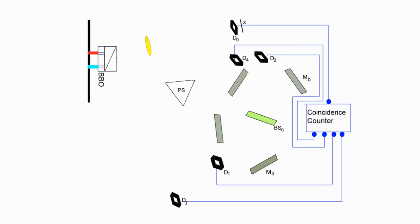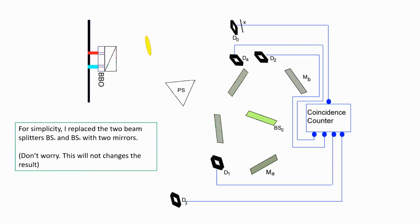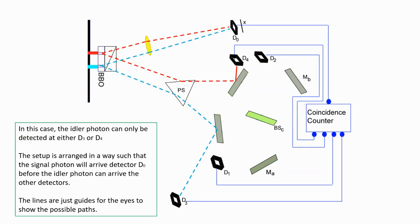For simplicity, I replaced the two-beam splitter with two mirrors. In this case, the idler photon can only be detected by either D3 or D4. The setup is designed such that the signal photon will reach the detector D0 before the idler photon can reach the other detectors.